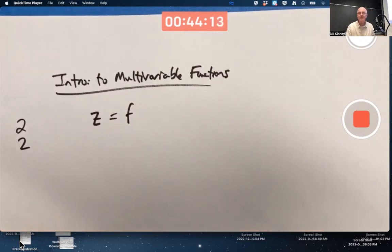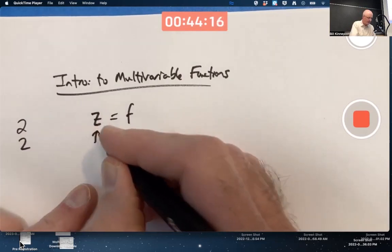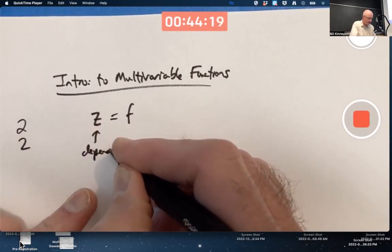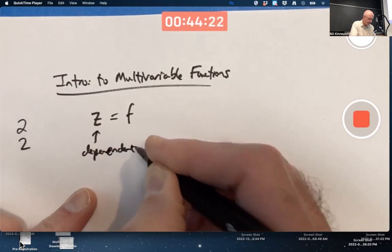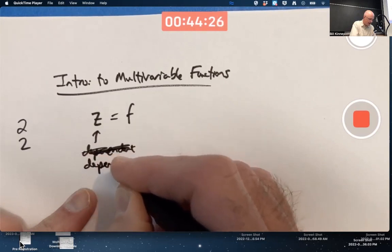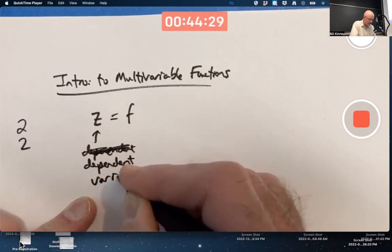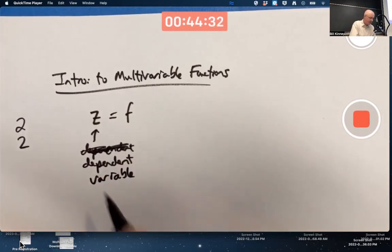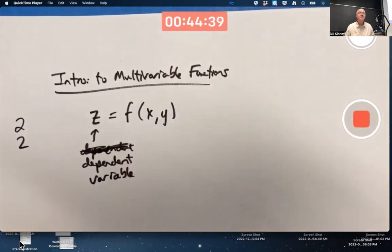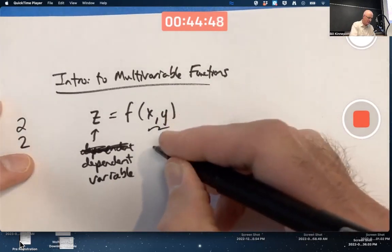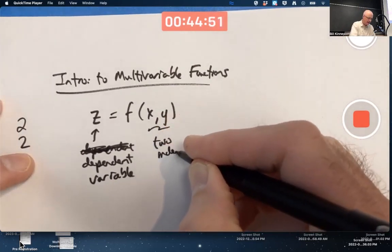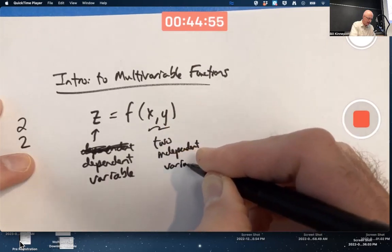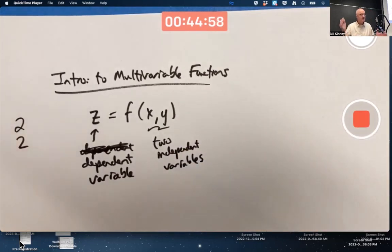Z is a common letter used for the dependent variable for a multivariable calculus function that has two independent variables, x and y. z equals f of x comma y. There's two independent variables that can indeed vary independently of each other.